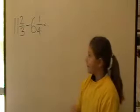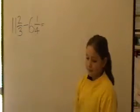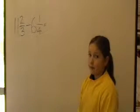Now for our harder one: 11 and 2 thirds take away 6 and a quarter. We have to change them to improper fractions.